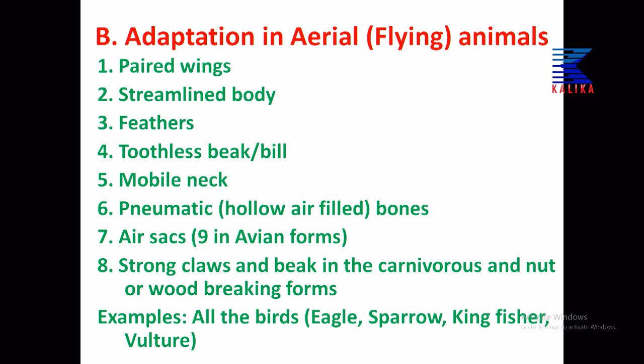They have paired wings and a streamlined body — aeroplane-shaped — to minimize air resistance. The body is covered with feathers helping flight. They have a toothless beak or bill. They have a mobile neck so they can see 360 degrees to protect from enemies. Pneumatic bones — hollow bones filled with air — make the body lighter. Air sacs continuous with the bones and lungs fill the body with air. Strong claws and beak in carnivorous forms for hunting, and strong beak for cracking nuts and wood. Examples: all birds — eagle, sparrow, kingfisher, etc.